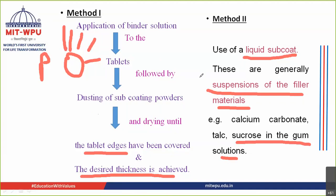In the liquid sub coat method, talc and sucrose are suspended in a binder gum solution, and this suspension is sprayed onto the tablet in the same manner as other coating materials. The advantage of this method is that it shortens the lengthier process of the first method. So there are two methods: the stepwise binder-plus-powder application, or the liquid suspension spray.